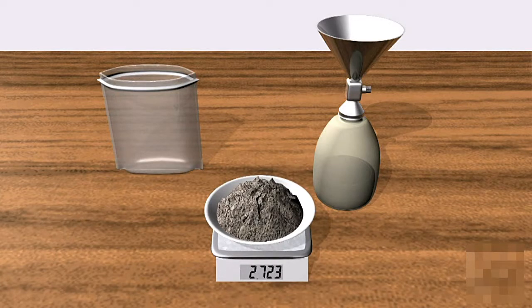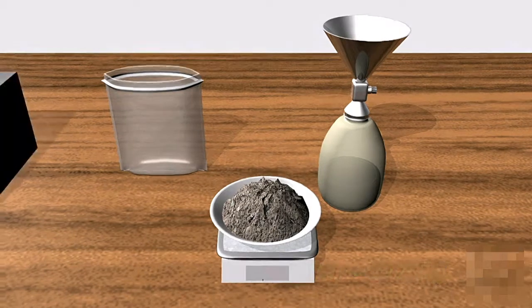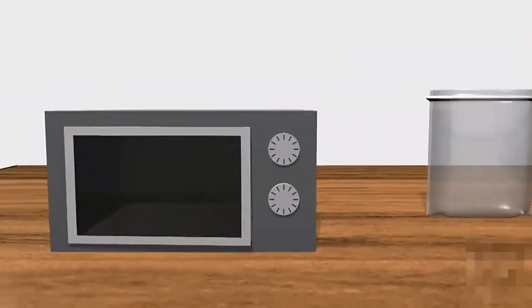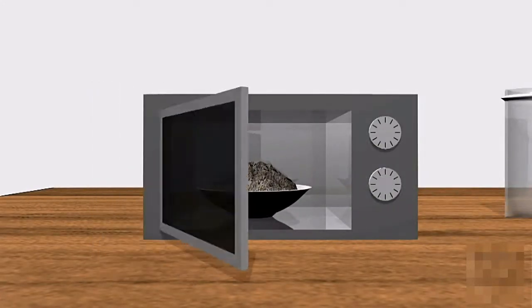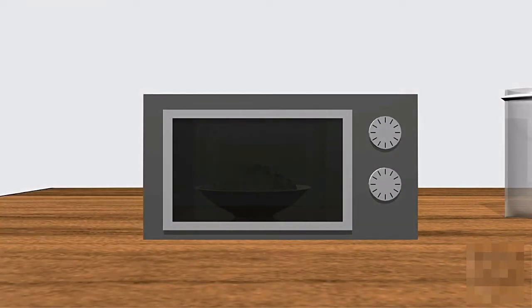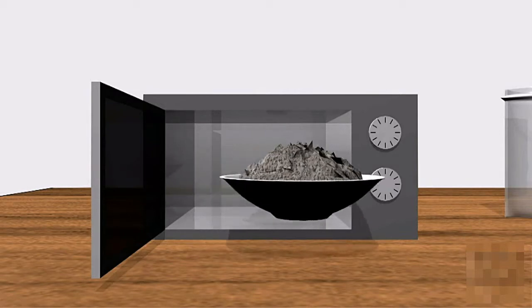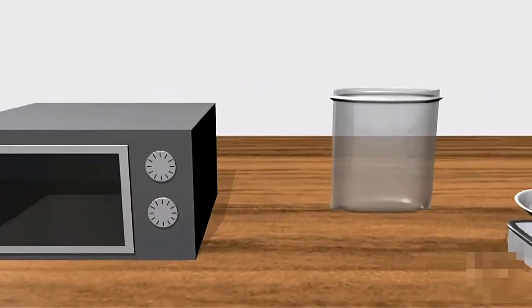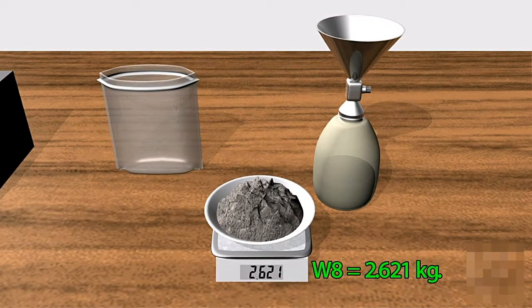Next we put the evaporating dish and wet soil in the oven. After 24 hours weigh it again. We get 2.621 kilograms, this is W8. Now we have all the data we need.